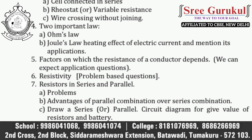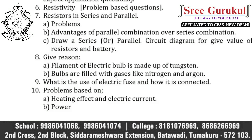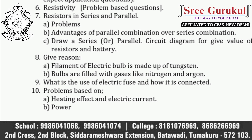Among these three types, you can expect any one question from your board examination 100%. Next, give reasoning questions from this chapter. First: filament of electric bulb is made up of tungsten. Second: bulbs are filled with gases like nitrogen and argon. Next: what is the use of electric fuse and how it is connected? Again, problem-based questions appear from heating effect of electric current or power — among these, you can expect any one question.